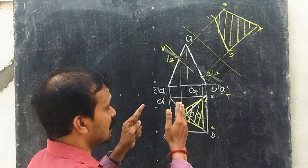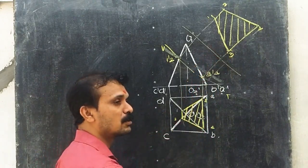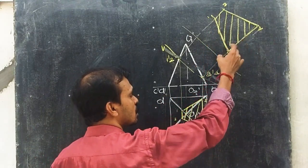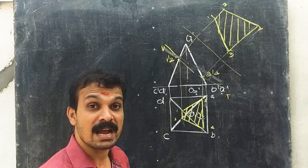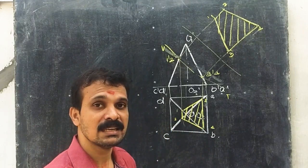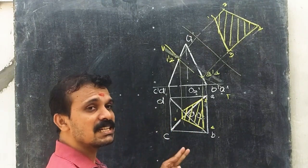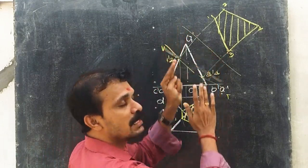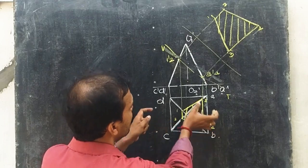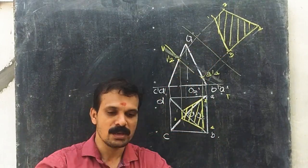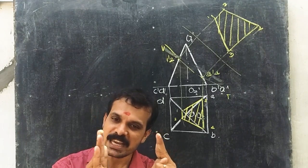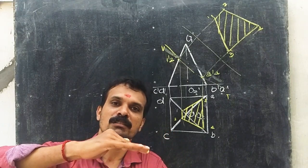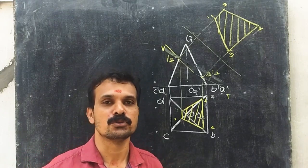To repeat: the relationship between the true shape and the top view of the section is that the distance taken along the y direction will be the same in both. The distance taken along the x direction will be elongated to a value equal to the length of the section plane in the true shape. So this distance in the top view will be elongated according to the length of the section plane, while the distance along the y direction remains the same in both.